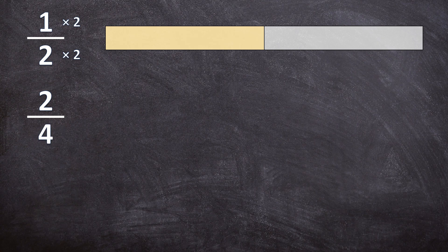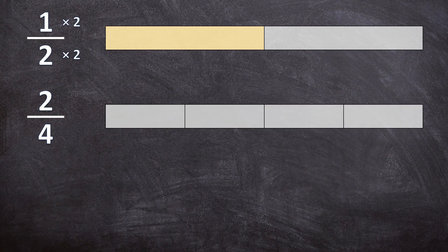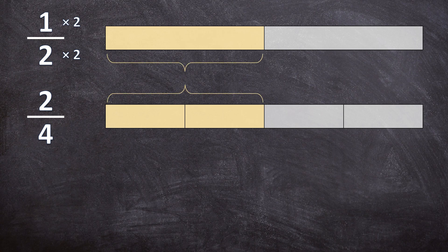Now let's draw and color in this fraction. I'm going to have exactly the same shape but this time divided into four equal pieces, and I'm going to color in two of those pieces. Can you see that the yellow colored parts for both of these shapes are equal? They are the same size, and the white parts are also equal, so it has the same value — they indicate the same amount of yellow in the shapes.